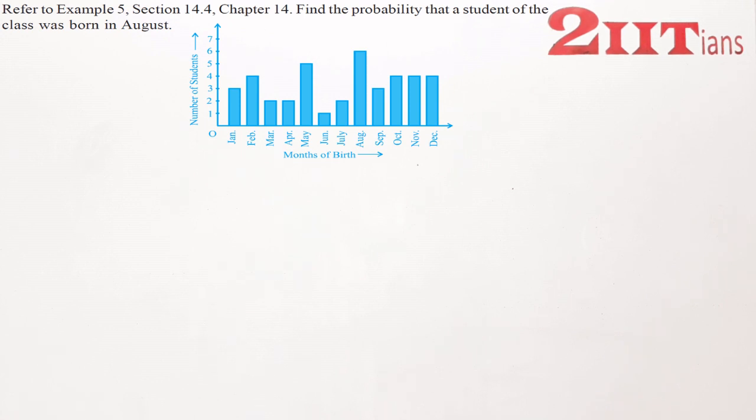Refer to Example 5, Section 14.4, Chapter 14. Find the probability that a student of the class was born in August.